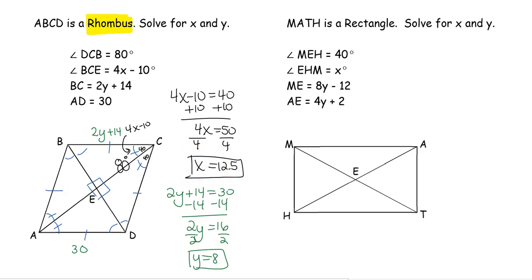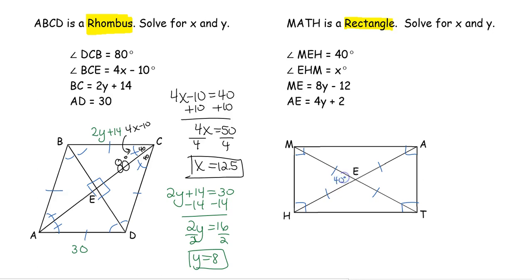When you look at your shape, you could be applying one of the new properties from that shape or any property from the parallelogram. Our last problem involves a rectangle — five properties from the parallelogram plus two additional: corner right angles and four congruent diagonal pieces. We have angle MEH equals 40 degrees, angle EHM equals x, ME equals 8y minus 12, and AE equals 4y plus 2.